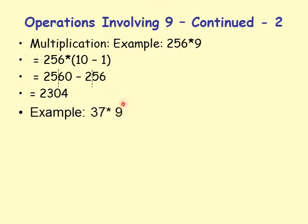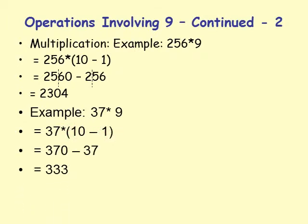Another example: 37 times 9. Again 9 is 10 minus 1. We replace this by 37 times (10 minus 1). 37 times 10 is 370, minus 37 times 1 is 37. So 370 minus 37: subtract 37 from 70 which gives 33, so the answer is 333.